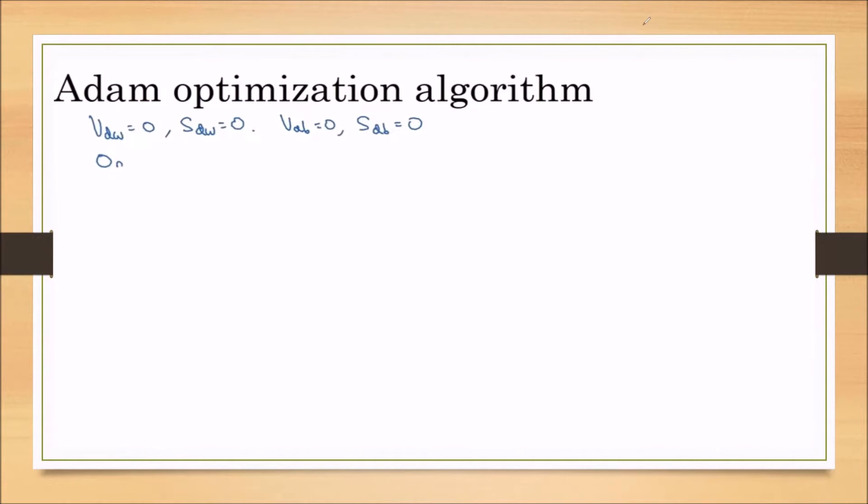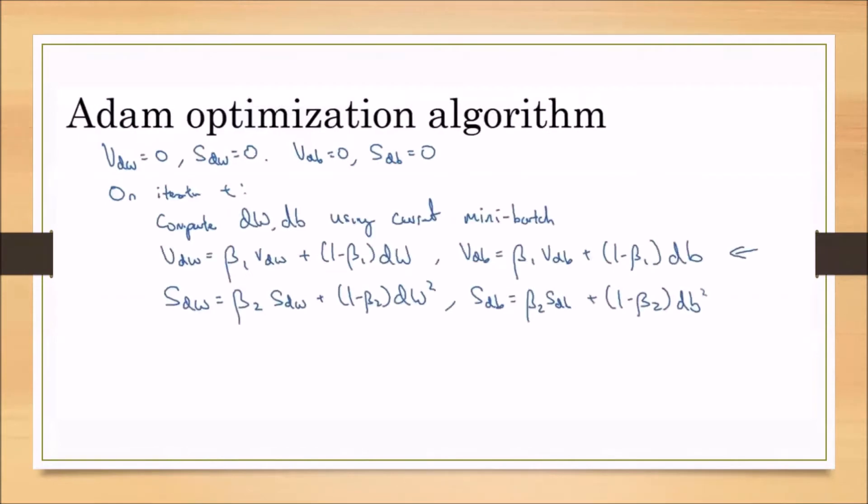Initially we are initializing all four terms with zero. Now we're taking the first iteration, second iteration - the iteration number will be controlled using t, which we are iterating externally.